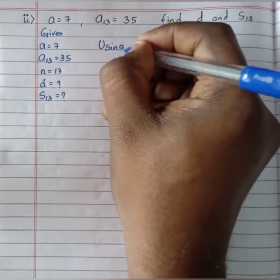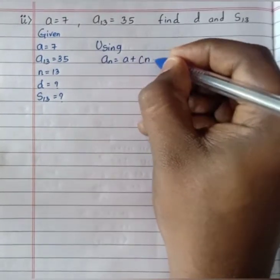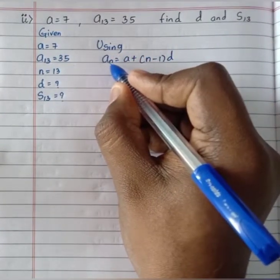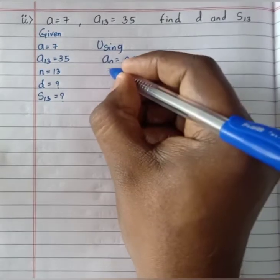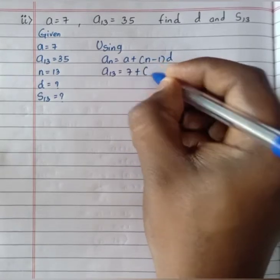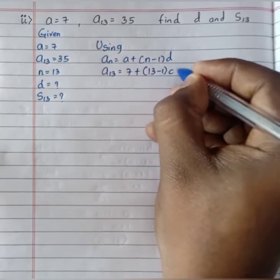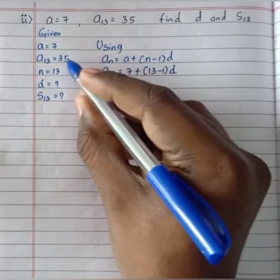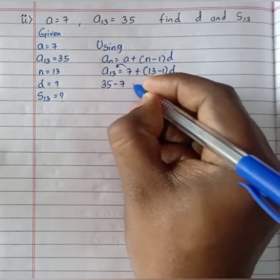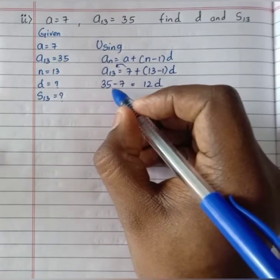Using the nth term formula an equals a plus n minus 1 into d, substitute all values: a13 equals 7 plus 13 minus 1 into d. Since a13 is 35, we get 35 equals 7 plus 12d. Shifting minus 7 to the LHS, 35 minus 7 equals 12d.